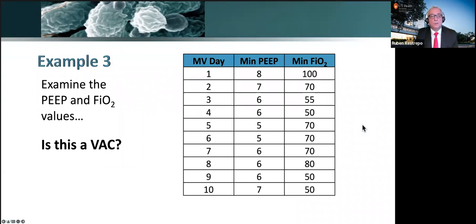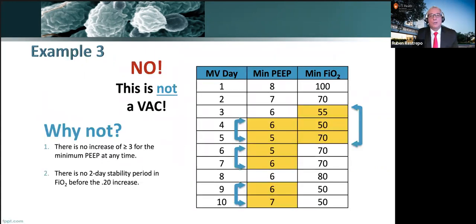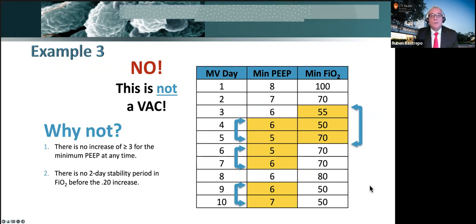In example three, looking at minimum FiO2: it goes 55, 50, then increases to 70. But when it goes to 70, there are not two days of previous stability before — I have 6 and 5, so this cannot be the day of the VAC. Similarly, you have stability in another period, but no increase of three centimeters of water. This means you can have a patient on the ventilator for 7, 10, or 14 days, but may not have a ventilator-associated complication under the new criteria.